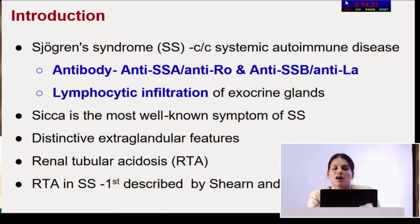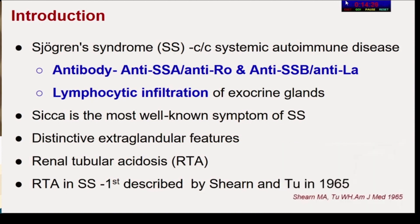As Professor Halskofield already mentioned, there are two very important aspects to the diagnosis of Sjogren's syndrome: the presence of antibody, and the presence of lymphocytic infiltration of exocrine glands. Sicca is the most well-known symptom of Sjogren's syndrome, though it may not be the most common. There are distinctive extra-glandular features, and RTA is one such manifestation.